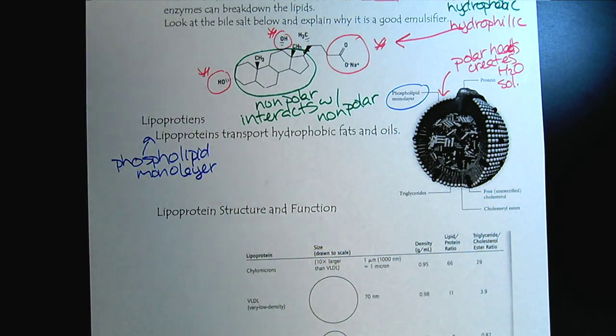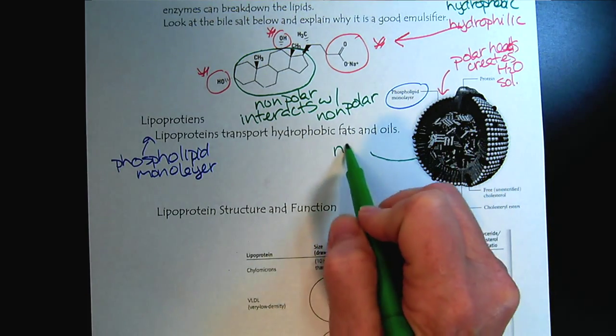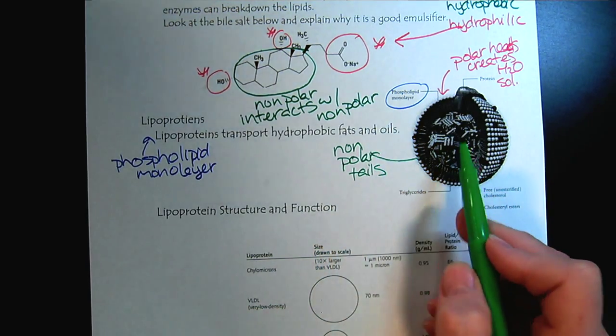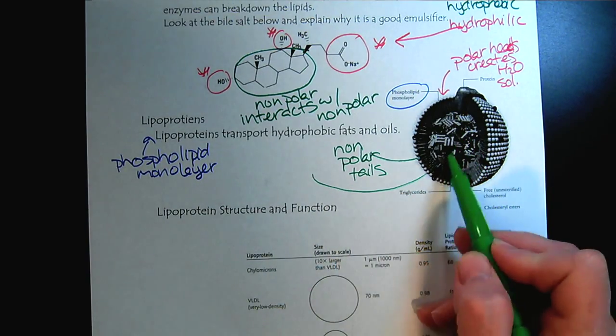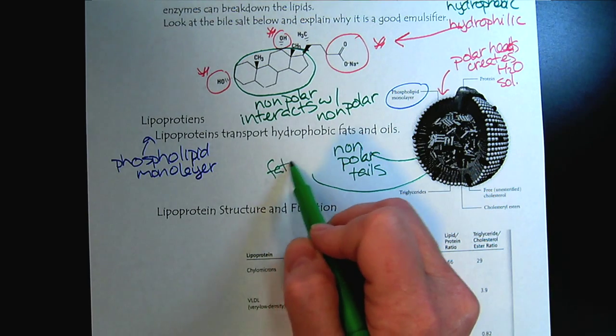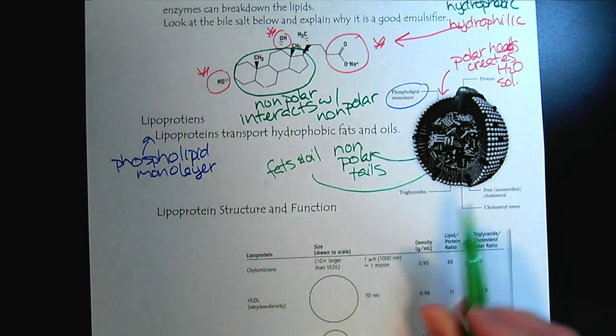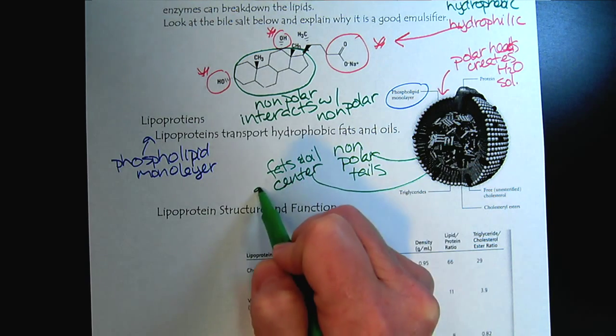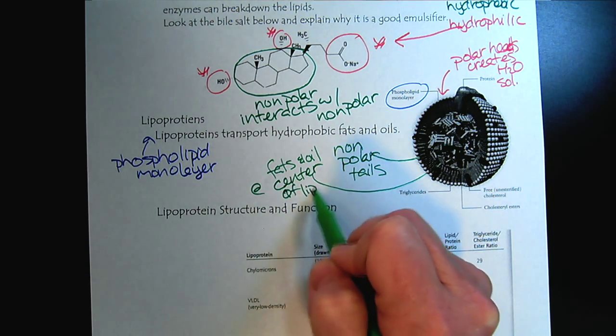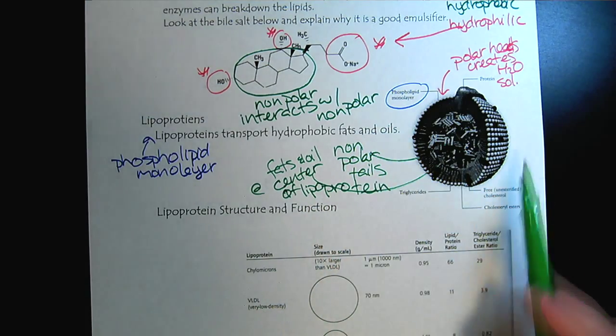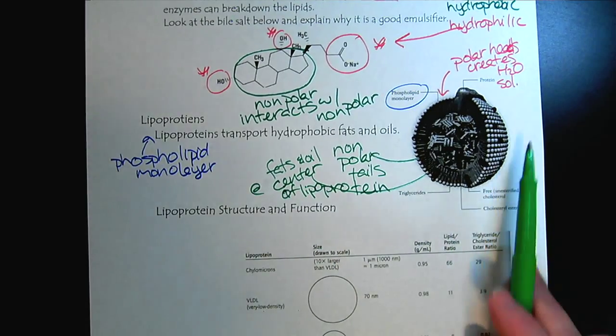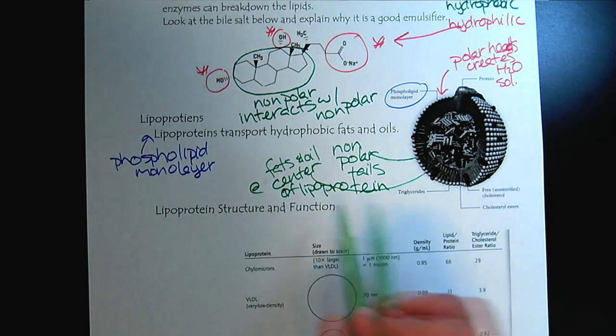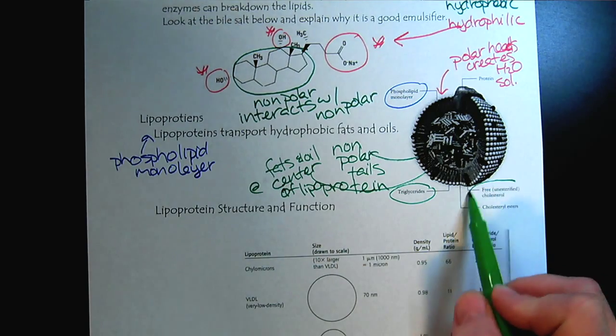But then here's all the nonpolar tails. And so the nonpolar tails can interact with all of the lipids. So here are the fats and oils. And their breakdown products as they get smaller and smaller are at the center of the lipoprotein. So the polar heads create the water solubility. So there are these little spheres that have the nonpolar substances inside. And so those would be the triglycerides and we'll also have cholesterol.